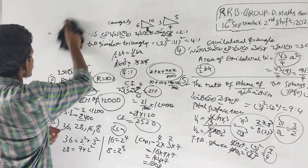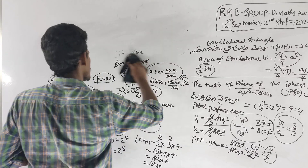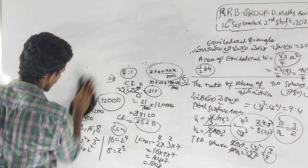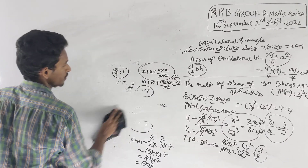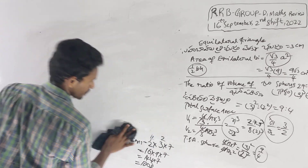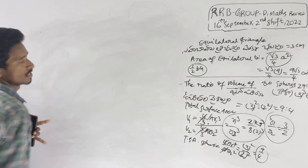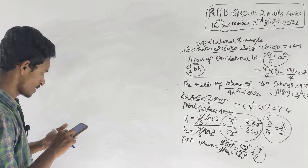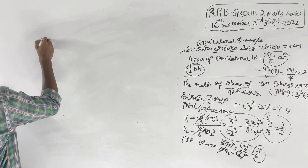We can learn the formulas — must and should. We need trigonometry formulas. We need mean, mode, and median. We can learn the math — it's easy to do. We can't do it fast, but it's easy to do.